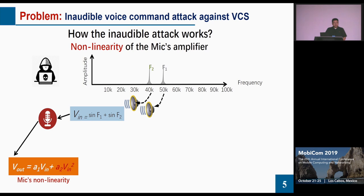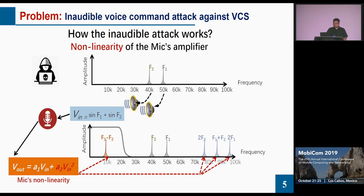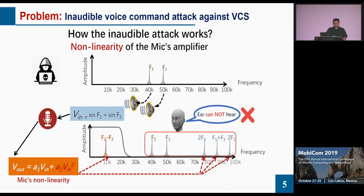If the adversary sends out multiple high frequency signals and those signals arrive at the microphone of the VCS, the microphone's non-linearity will create several frequency components as shown in this figure. Note that the components in the red frame cannot be heard by human ears — they will be filtered out. But the component F1 minus F2 falls within the passband of the amplifier and can be recorded by the microphone. This is how the inaudible voice command attack works.